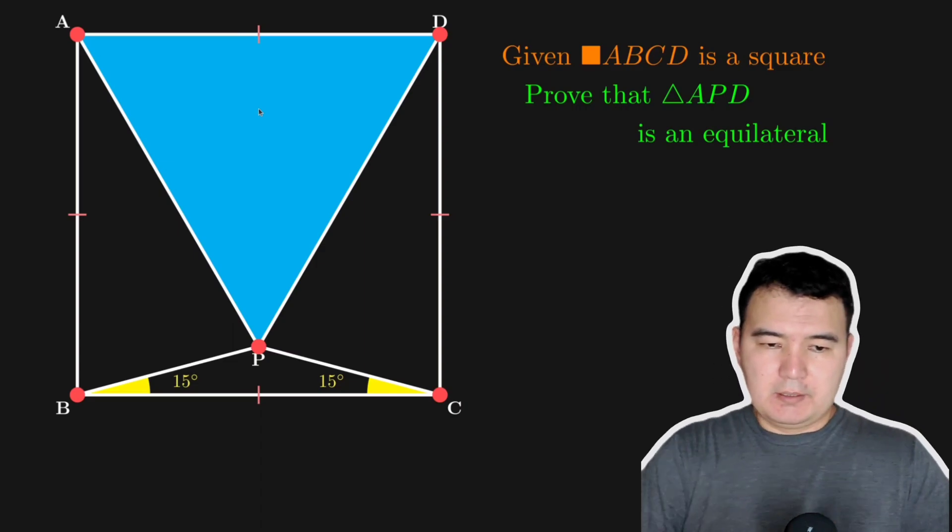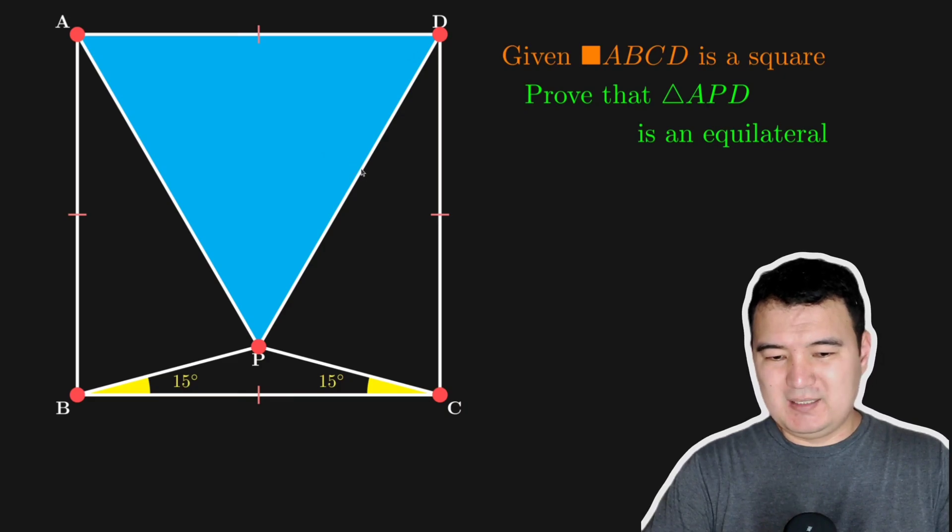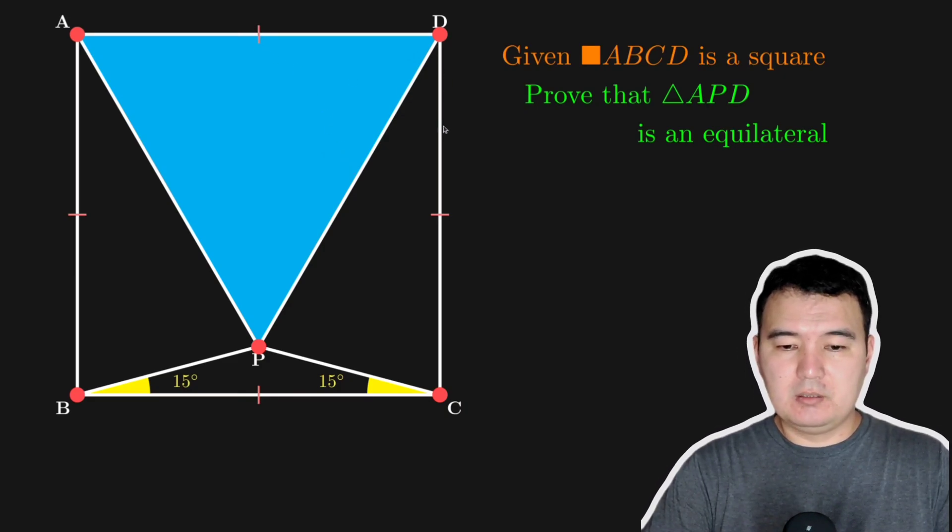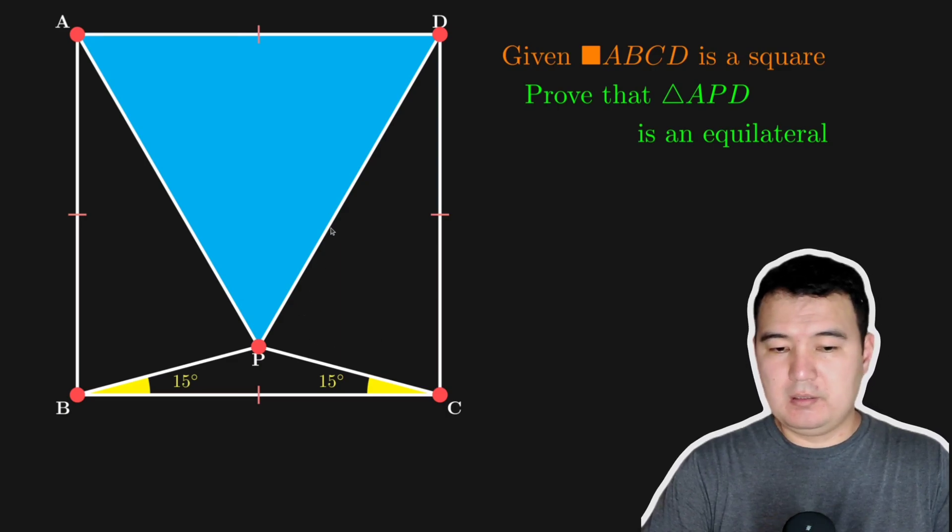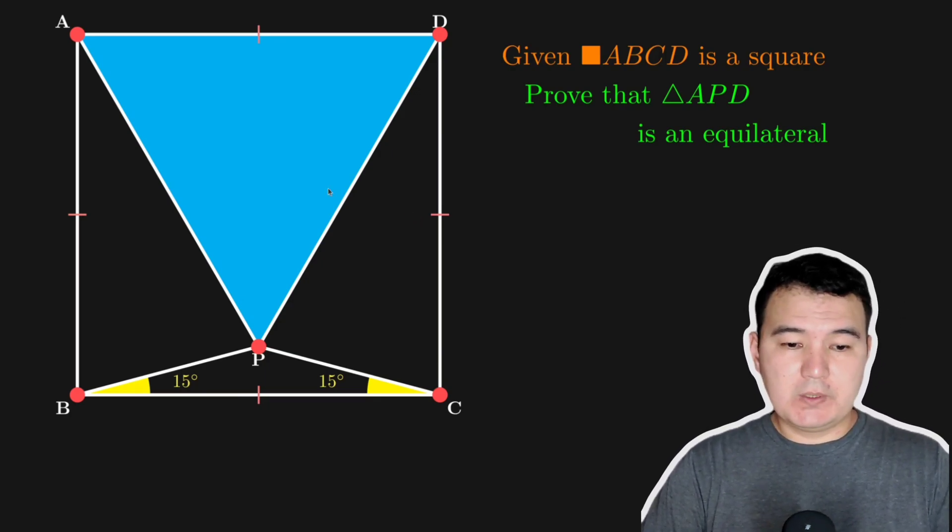So basically, we can try to find one of the angles or prove that this side. So since we know that one of the sides here AD is equal to the sides of the square, we can try to prove that this is equal to this one. Okay, so the first way is this.